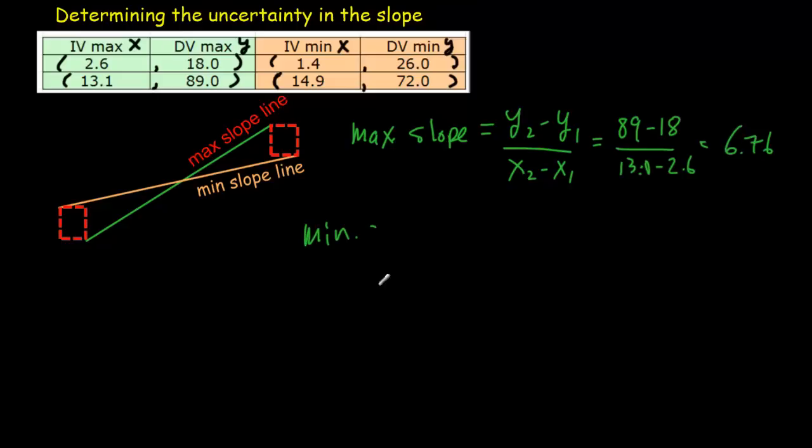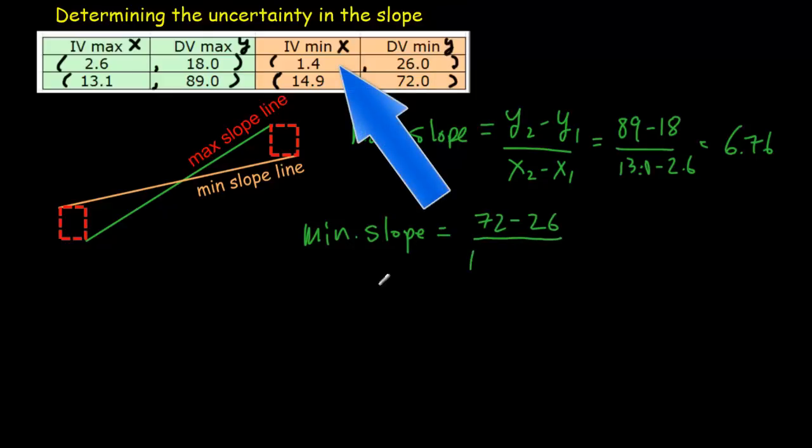Similarly, for our minimum slope, our y values will change from 26 to 72. So that's 72 minus 26. As our x values change from 1.4 to 14.9. And if you work that out, you should get a minimum slope of 3.40.